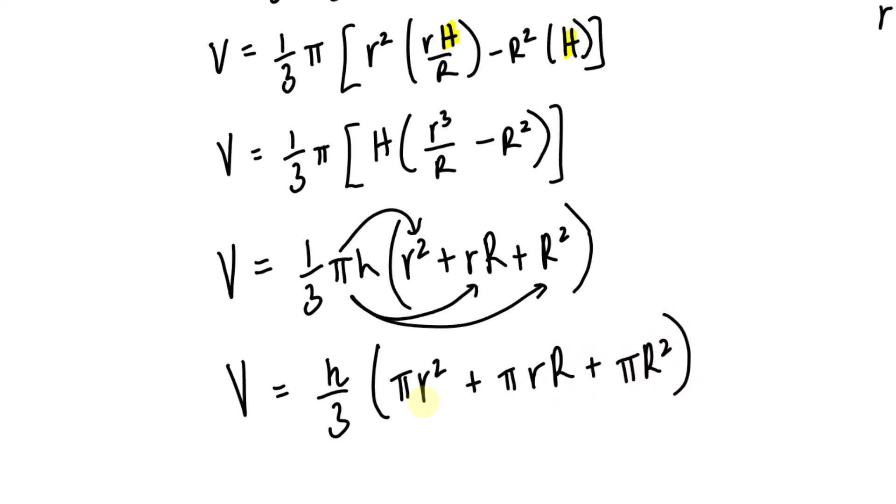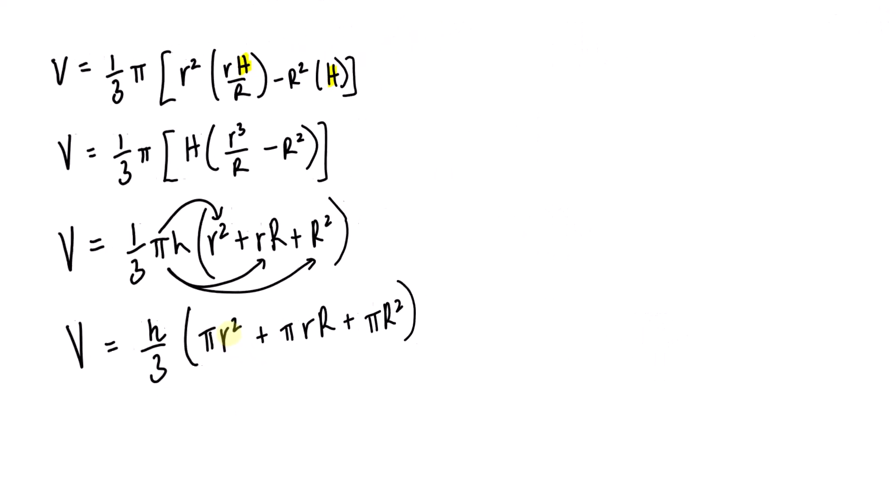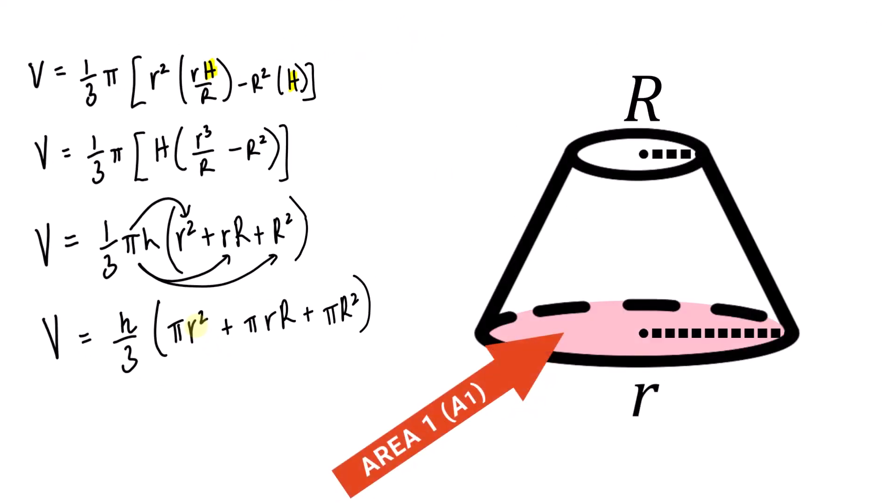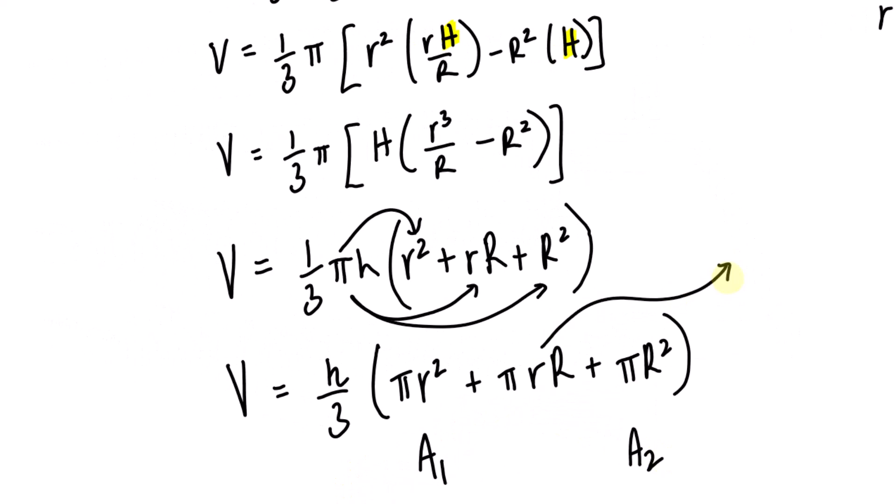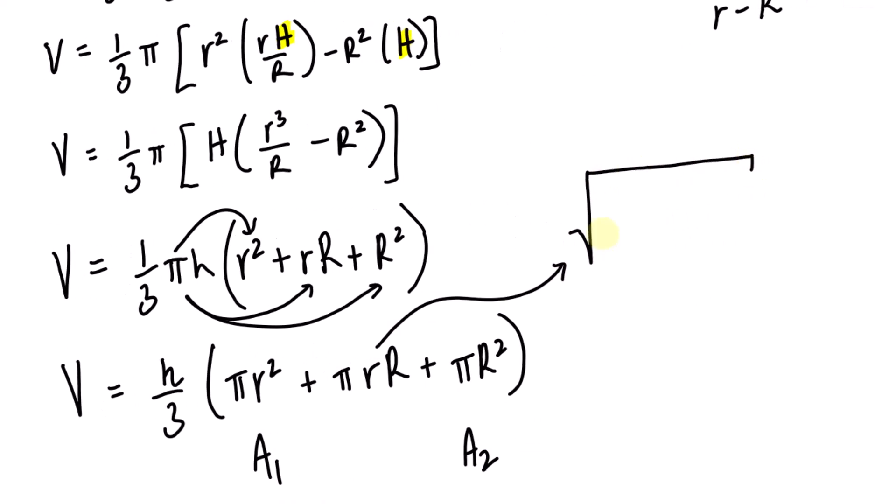Now look at these expressions carefully. We have pi r squared. That's the formula for the area of a circle. And r squared was specifically for area one. So I will replace pi r squared with A sub one. We want to generalize this equation so that it can be used for any frustum, not just those with circular bases. This one will be replaced with A sub two. And this one, which is a little more tricky, is no different than taking the square root of pi r squared times pi capital R squared. And again, this is A sub one, and that's A sub two.